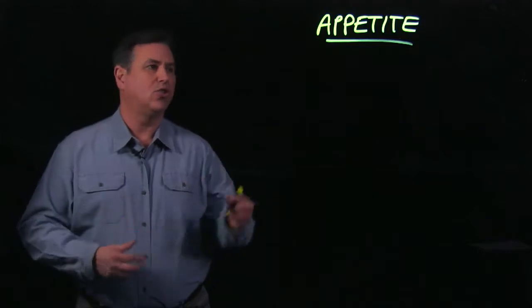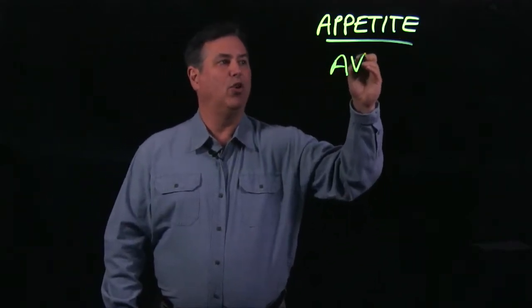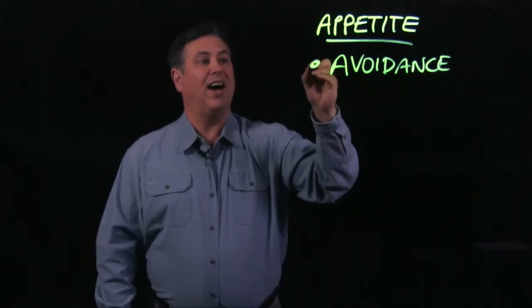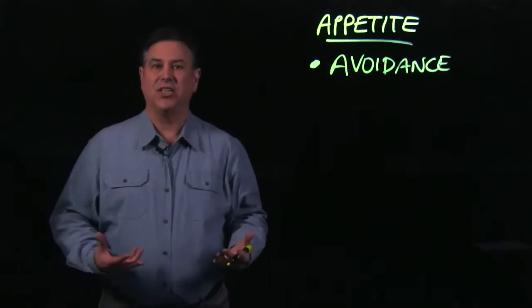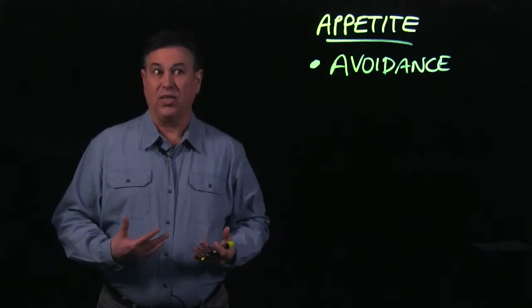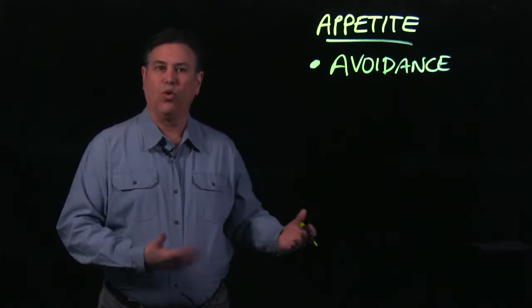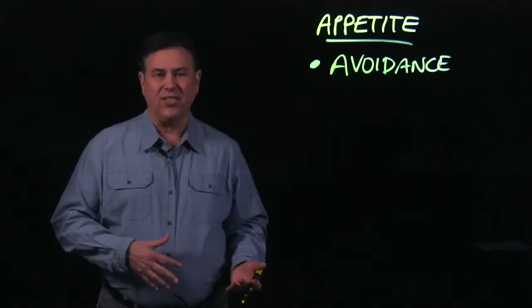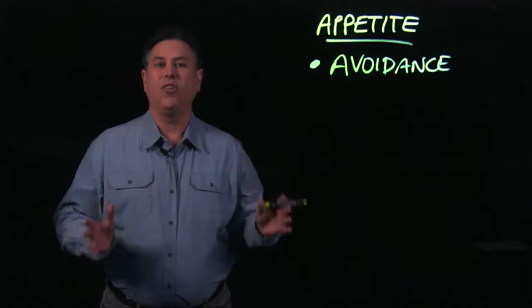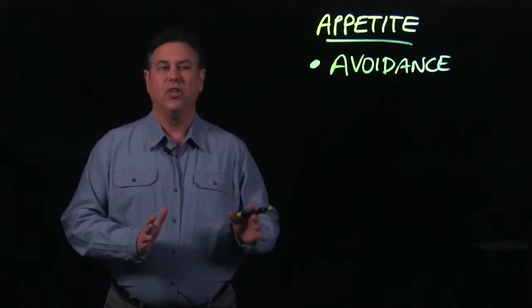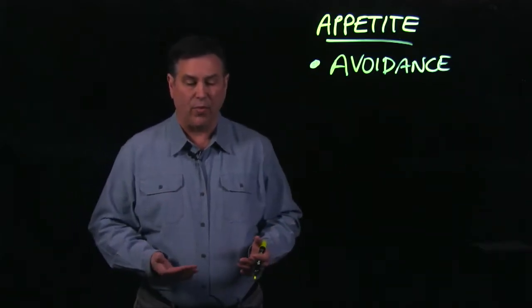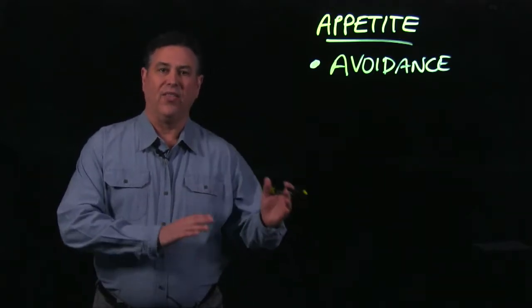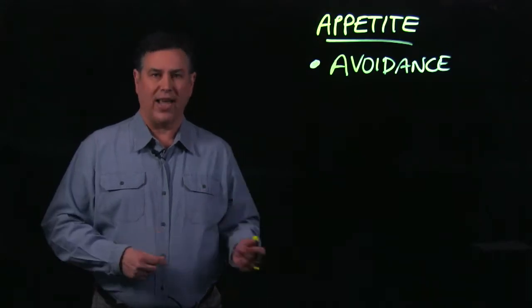The first method that we use to treat risk is to avoid the risk, or it's called risk avoidance. This involves not taking the action, not engaging in the activity that actually leads to the residual risk. So purging any threats, any activities, not going through any types of processes that would introduce new risks. We avoid it altogether. The goal is trying to entirely circumvent the introduction of a threat actor or a threat agent.